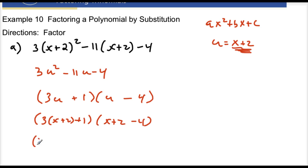3 times x is 3x. 3 times 2 is a positive 6 and then plus 1. And then this right here just becomes x minus 2. We can simply clean this up now by just saying 3x plus 7 times x minus 2. And that right there would be the answer.